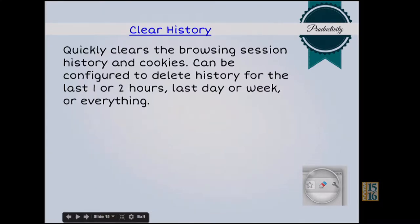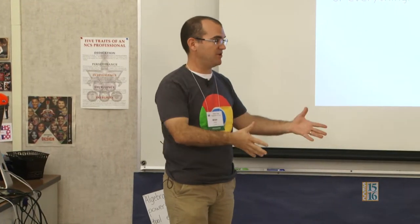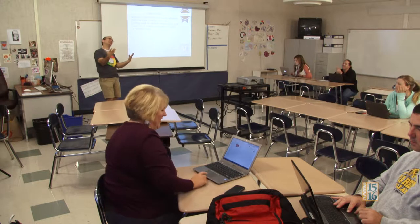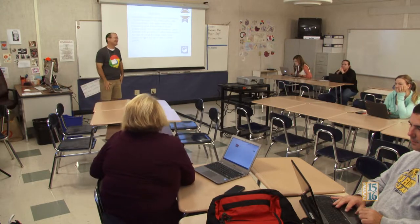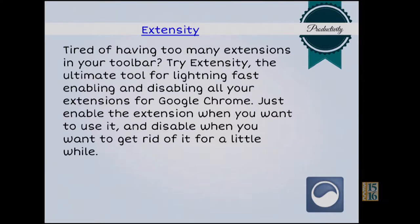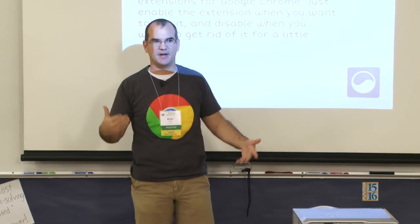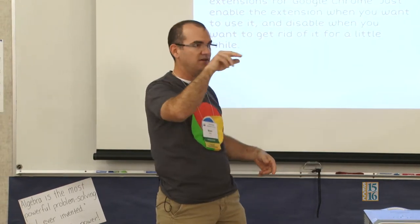Clear History is another one. It just clears your browser history if you need to. A lot of times if I jump onto another computer and log in with my account, it's saving my history. I can just hit Clear History, sign off, and not worry that it's on someone else's computer. Extensity is one I use also. When you have a lot of extensions, instead of going to settings, I can just go to this button, click on it, and turn extensions on and off that I want. It just eliminates a step — I can turn them on and off on the fly.